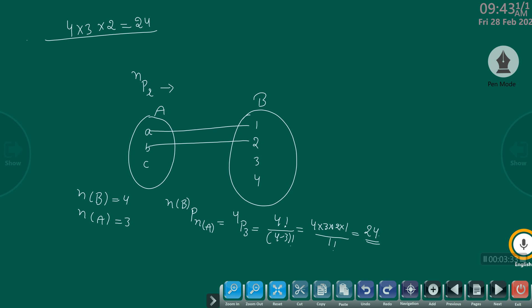So here permutation will apply, and for this formula, the number of elements in set B must be greater than or equal to the number of elements in set A. Clear?